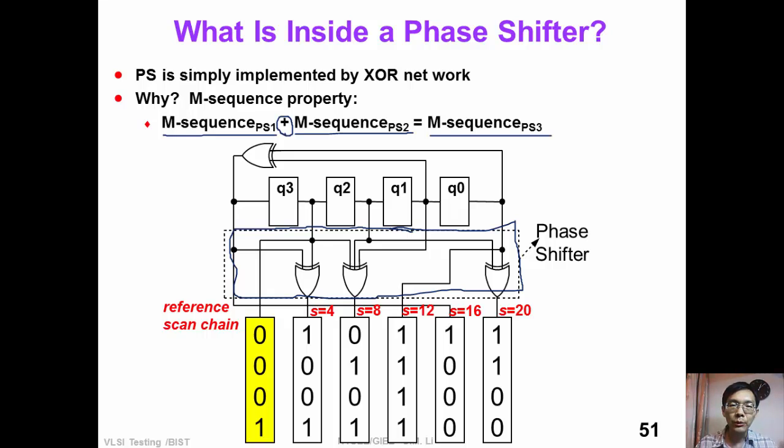That means if we take the exclusive-or of two LFSR outputs, we create another m-sequence with phase shifted. That is the reason why we can design a simple phase shifter to shift the phase among different scan chains.